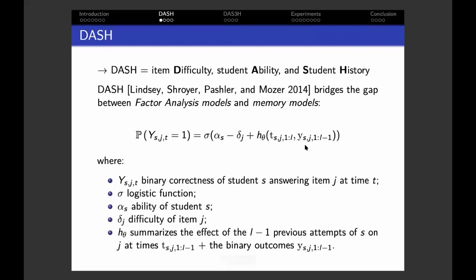DASH is a student predictive model created by Lindsay et al. in 2014. It models the probability of a student s correctly answering an item j at time t with a latent student ability term alpha_s, a latent difficulty term delta_j, and a function h_theta that summarizes the effects of previous attempts of student s on item j on this probability. In particular, it uses the timestamps and the outcomes of these previous attempts. This is why it was called DASH, because it uses the item difficulty, the student ability, and the past student history to make inferences about future student outcomes.